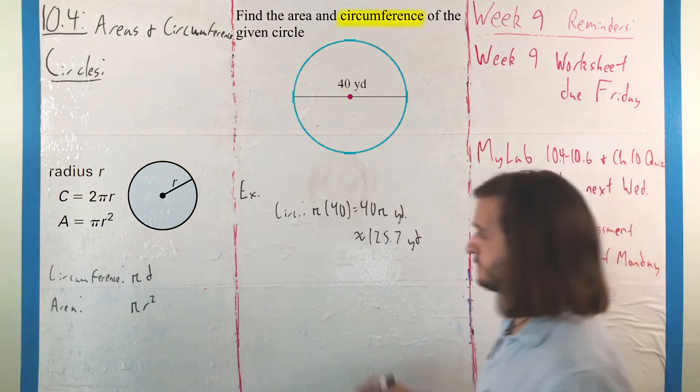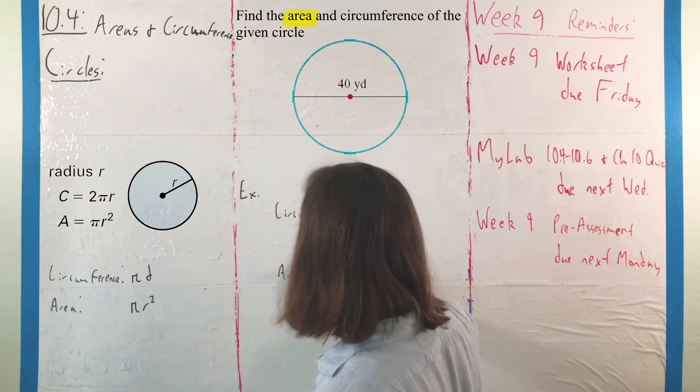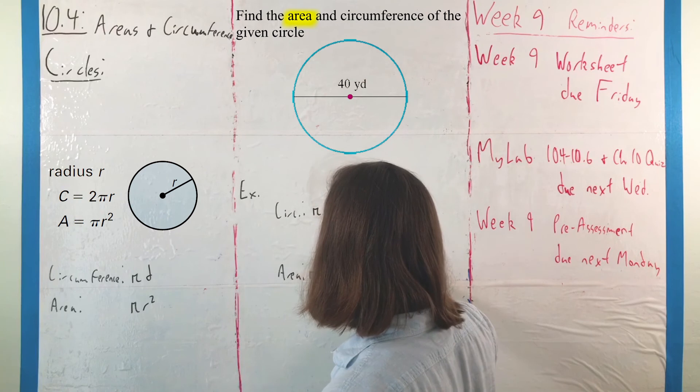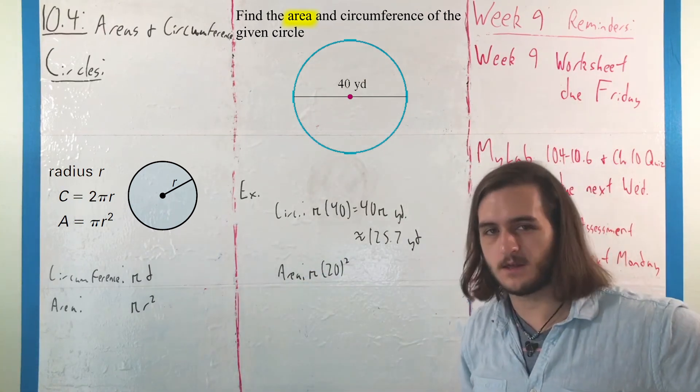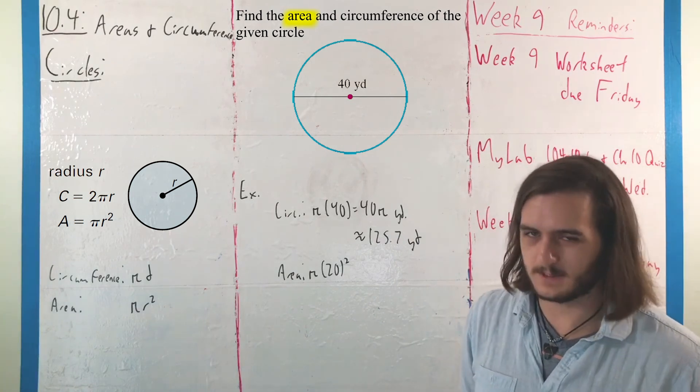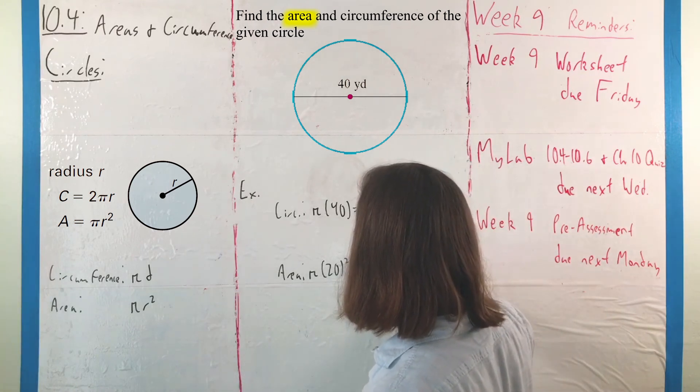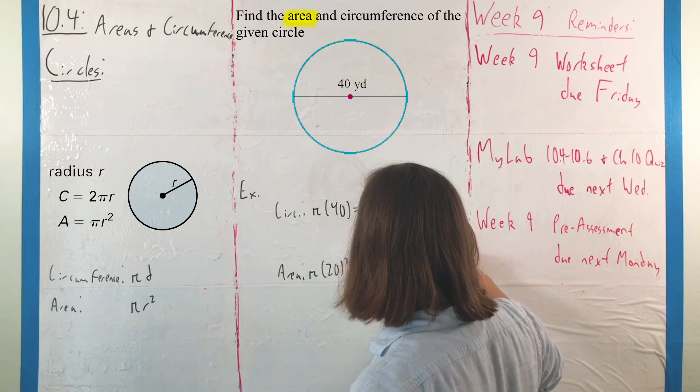And then for the area, we would have pi times the radius 20 squared, where it's kind of a funny thing in this case, that the square of the radius ends up being the diameter times 10. So, for this, we would get 400 pi square yards.